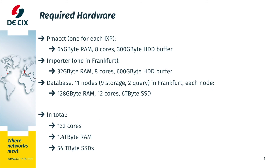To summarise, the hardware we use to analyse and process a 5.5TB internet exchange is a total of 132 CPU cores, 1.4TB of RAM and 54TB of SSD storage. When the need comes to expand, all we have to do is add more nodes to the Elasticsearch cluster.